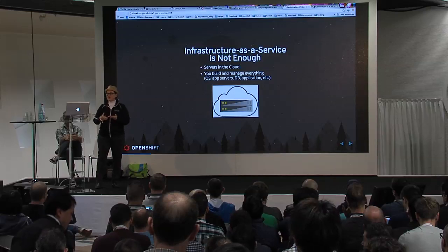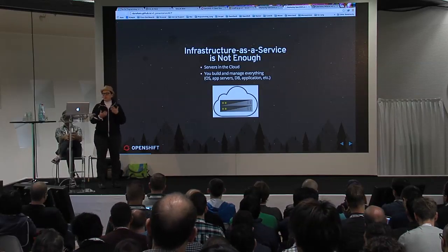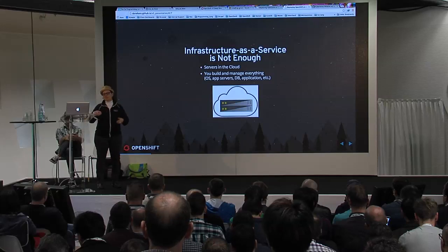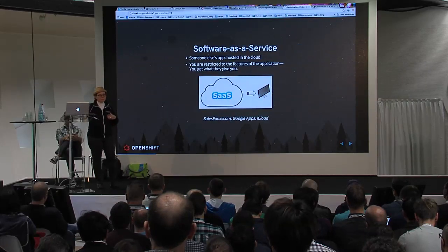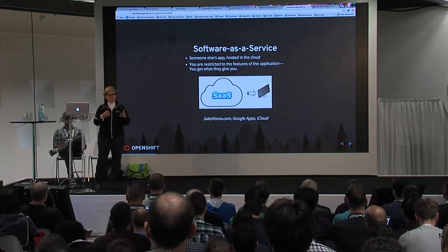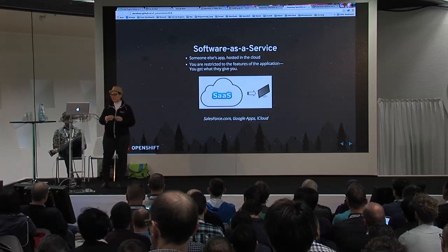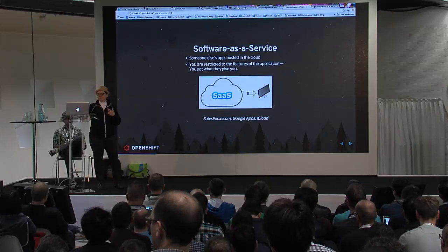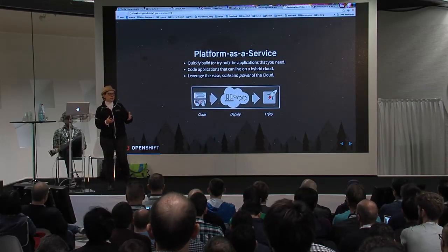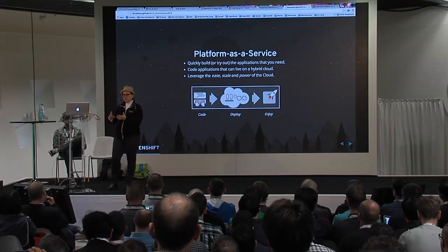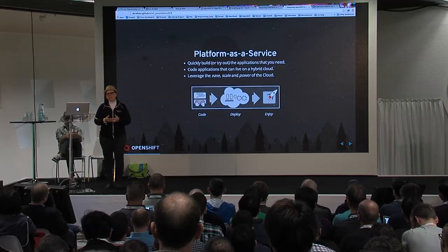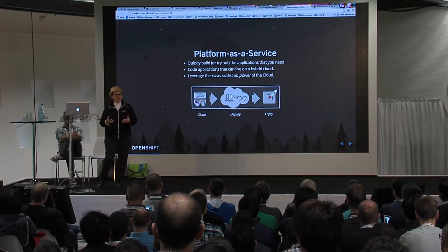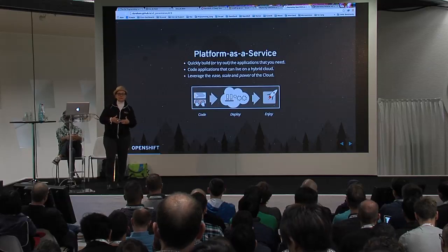Infrastructure as a service is not enough — you're still on the hook for building and managing everything right down to the OS, app servers, and database. Platform as a service automates that. PaaS in my humble opinion is really the secret sauce in the cloud — it's what makes development and agility to bring new products to market quickly, leveraging the scale and power of the cloud in a way that's compliant, easy to manage from ops, and easy to self-serve for developers.